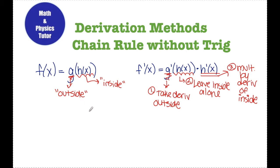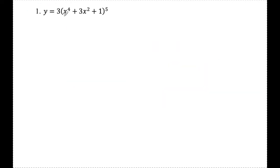Let's look at a couple of examples applying the chain rule. Number one: y is equal to three times, all in parentheses, x to the fourth plus 3x squared plus 1, to the fifth power. I'm going to look at what's inside the parentheses as the inside and think of the whole thing as something to the fifth power.